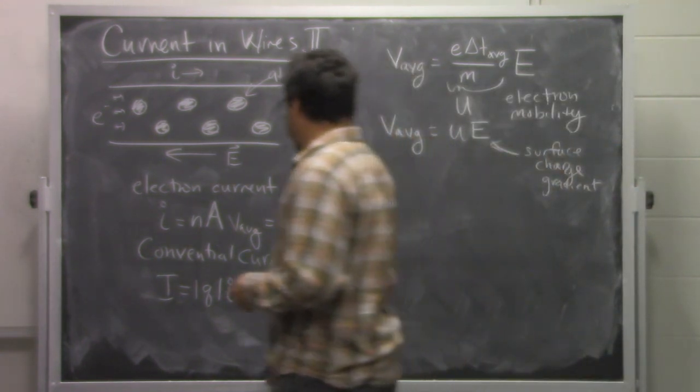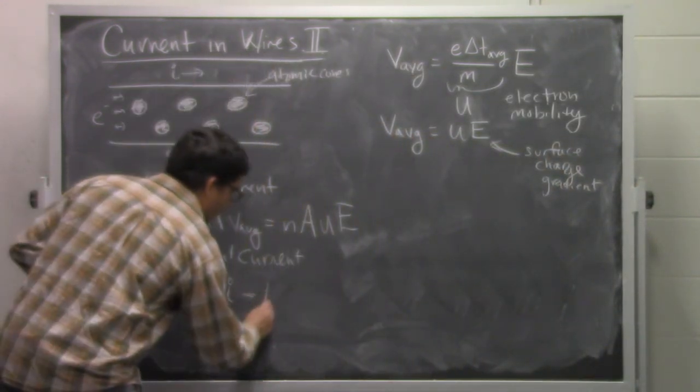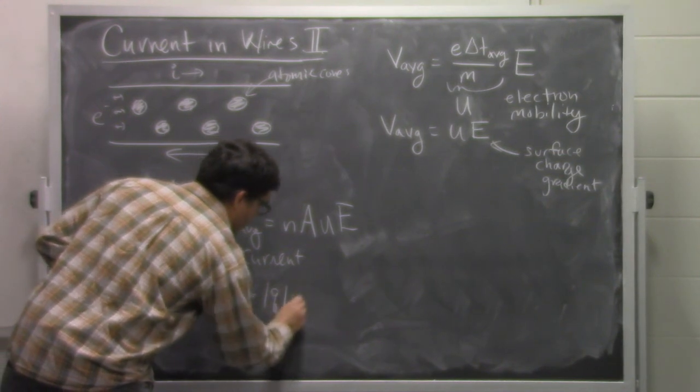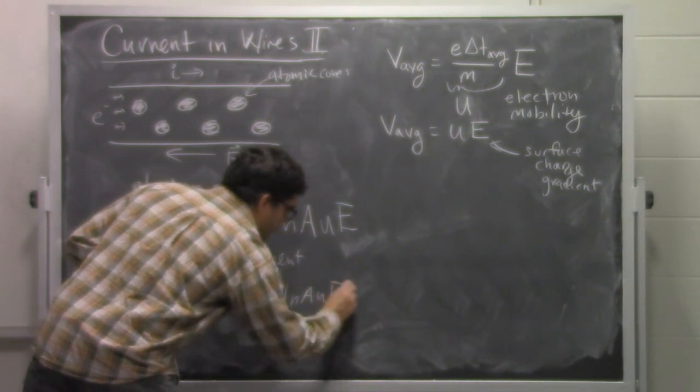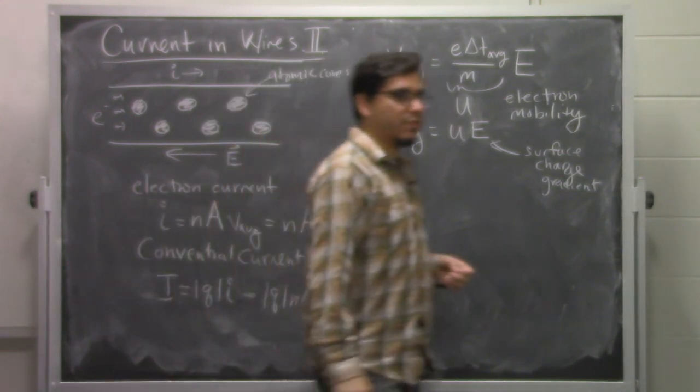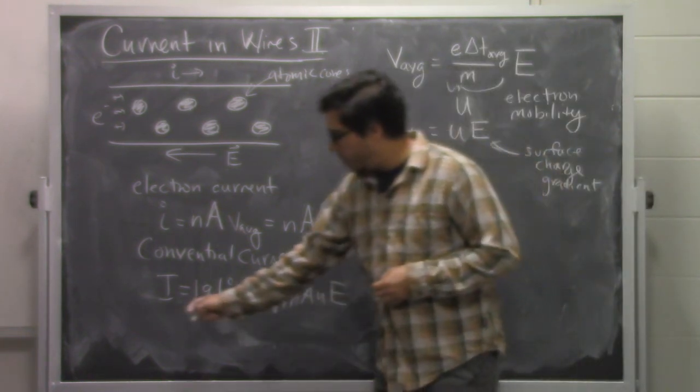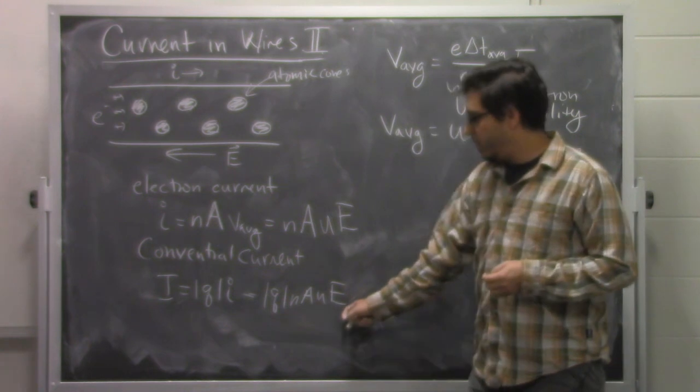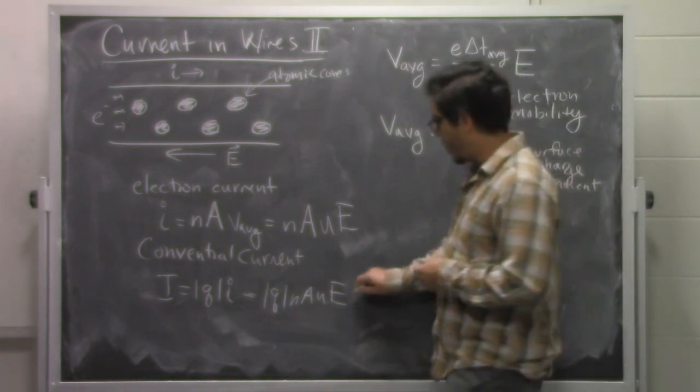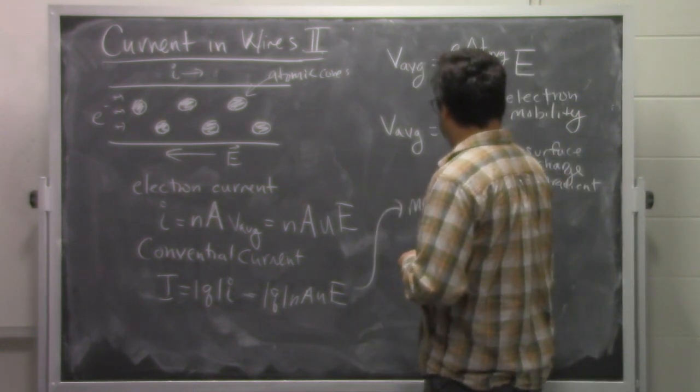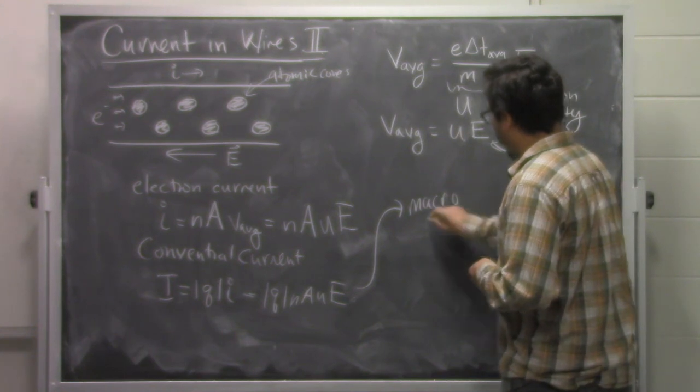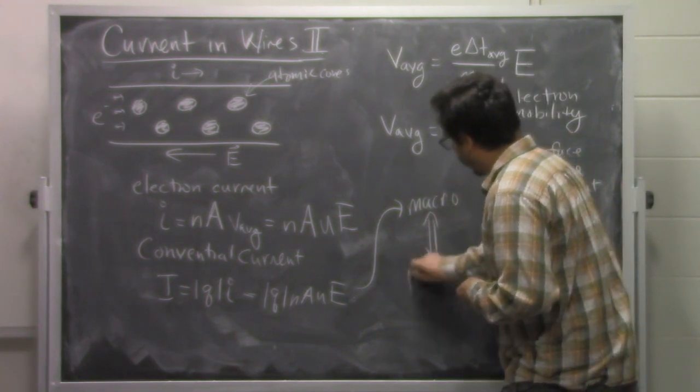But it turns out that in this model, it is related to the electric field that is in the wire as a result of the surface charge gradient. So what we have here is a definition of the conventional current in terms of microscopic quantities. That is what we've done is we've connected the macroscopic world with the microscopic world.